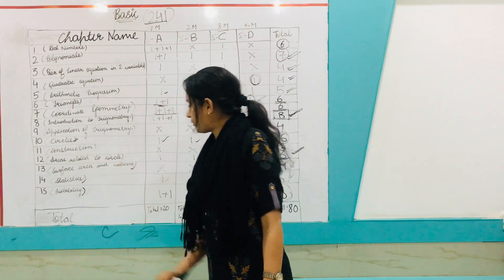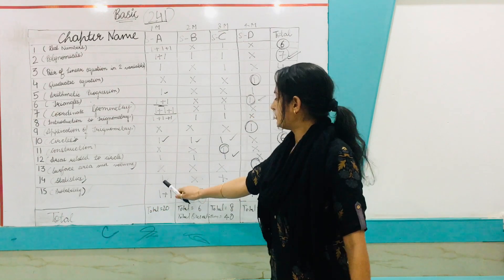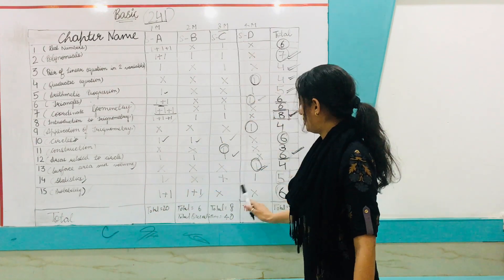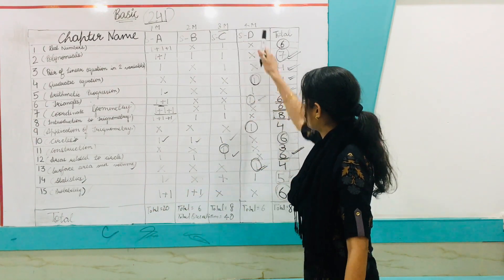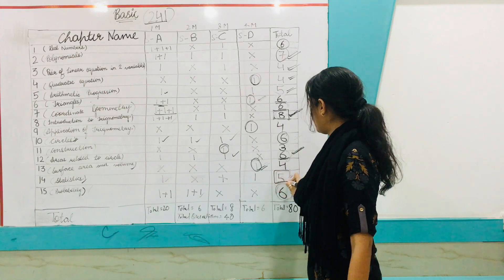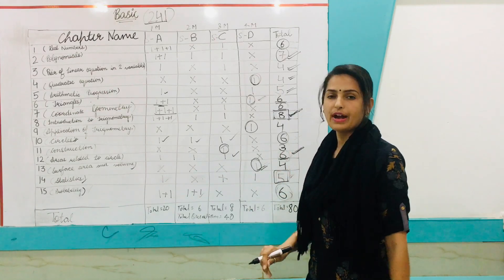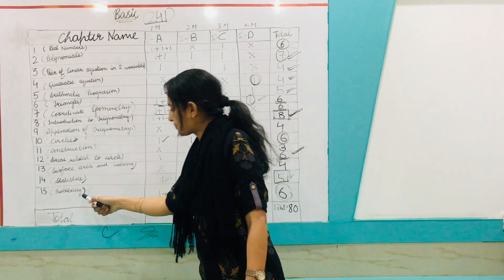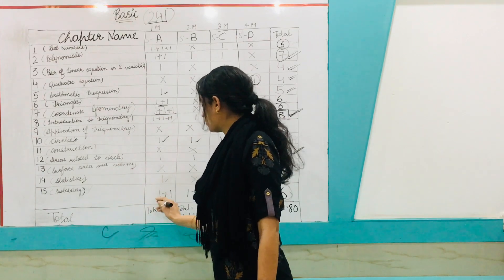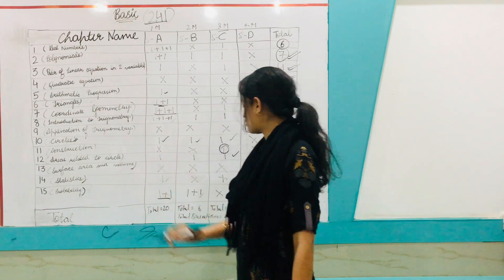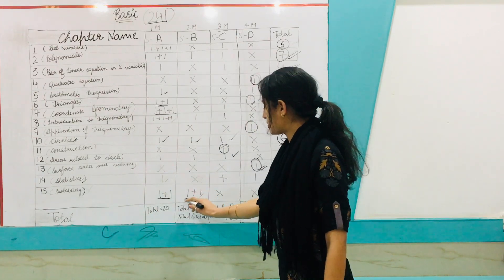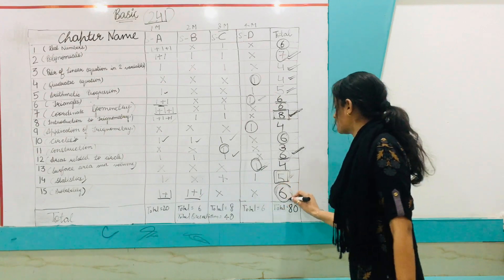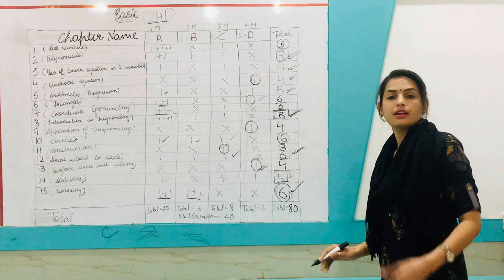Chapter 14, Statistics — one question of one mark and one question of four marks, totaling five marks. Chapter 15, Probability — two questions of one mark each and two questions of two marks each, totaling six marks.